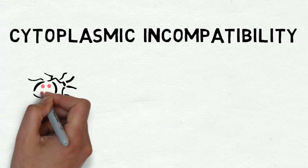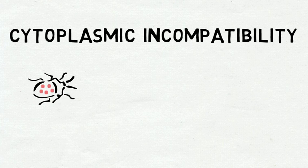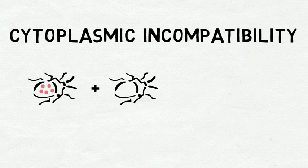If one insect is infected with a particular strain of Wolbachia and mates with another insect infected with the same strain, their offspring will also be infected.